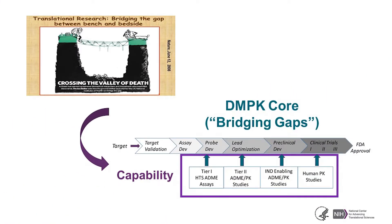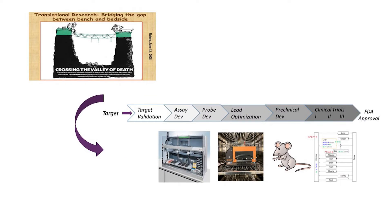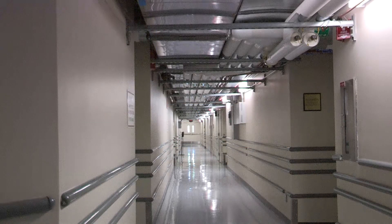To bridge the gap between drug discovery and human clinical trials, the DMPK lab is built with the capability to support a project from an early exploratory stage with high-throughput screening Tier 1 ADME assays and all other stages of drug discovery and development up to clinical trials. Our lab capabilities are built accordingly. Now, let's visit our lab and meet with our scientists.